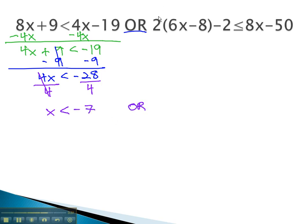Or, in the other equation, we must start by distributing to get 12x minus 16 minus 2 is less than or equal to 8x minus 50. Combining like terms, 12x minus 18 is less than or equal to 8x minus 50.